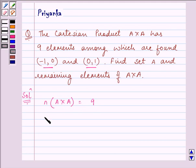As we know, the number of elements A has multiplied by the number of elements A has gives us the number of elements in A×A. That is, n(A) × n(A) = n(A×A).